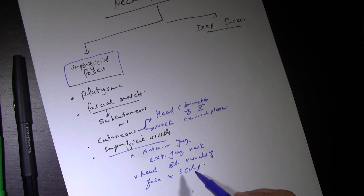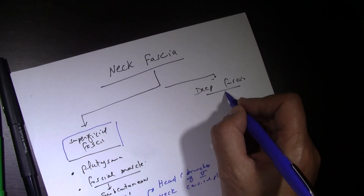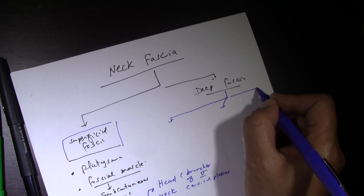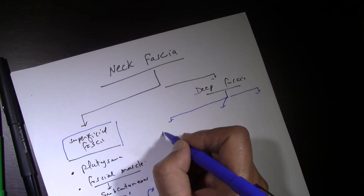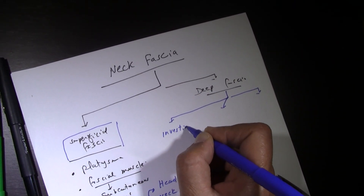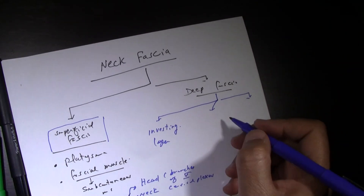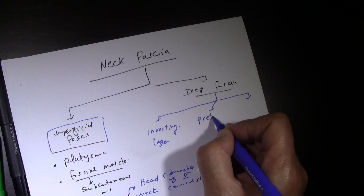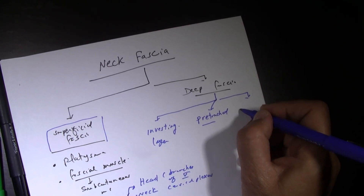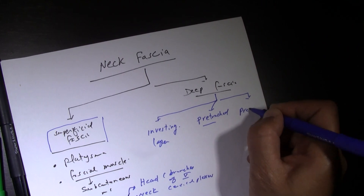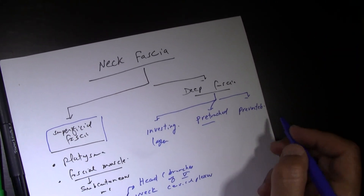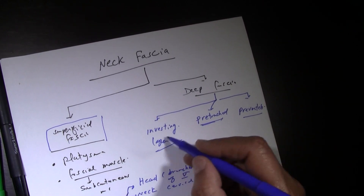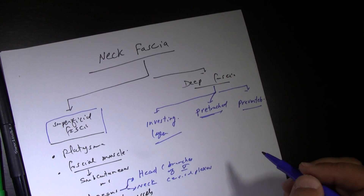Now, the deep fascia has three layers. The first is the investing layer, which is the most superficial. The second, or middle, layer is the pretracheal layer. The third and deepest layer is the prevertebral layer. So the three layers of deep fascia are: investing, pretracheal, and prevertebral.